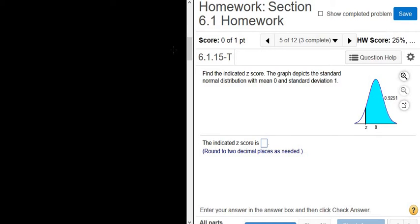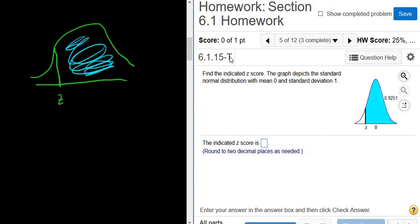In this problem here, we're given an area, so let me draw it over here so you see it. We have a z-score here, and our area is shaded in blue. This number here, this 0.9251, that's the area.